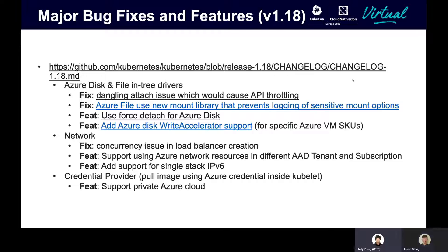Now we're going to do a quick go-through of all the major bug fixes and features in 1.18. In Azure File and Disk in-tree drivers, we fixed a few bugs like the dangling attach issue which would cause API throttling. For the Azure File driver, we use a new mount library that prevents blocking of sensitive mount options. We also introduced use-force-detach for Azure Disk, and added Azure Disk write accelerator support for specific Azure VM SKUs. On the network side, we fixed a concurrency issue in load balancer reconciliation, added support for using Azure network resources in different AAD tenants and subscriptions, and added support for single-stack IPv6. On the credential provider side, we added support for private Azure cloud.